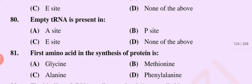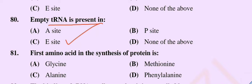Question number 80. Empty transfer RNA is present in: option A, A-site; option B, P-site; option C, E-site; option D, none of the above. The correct option is option C, E-site.